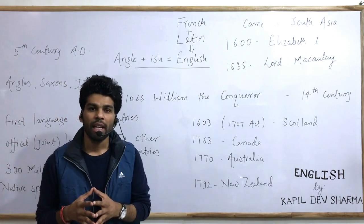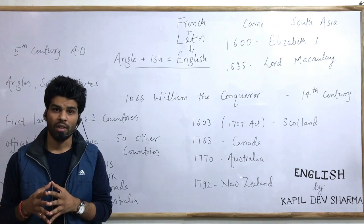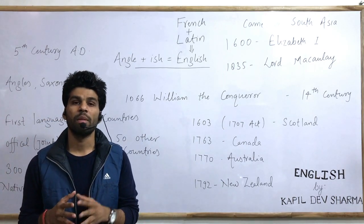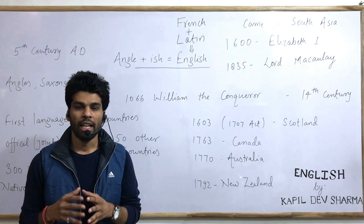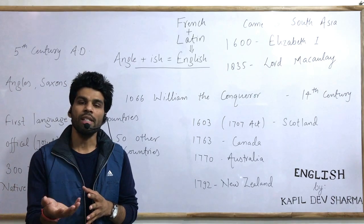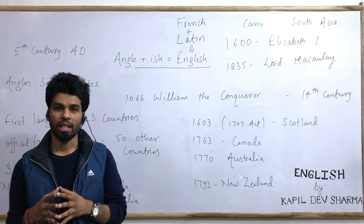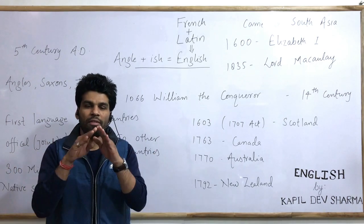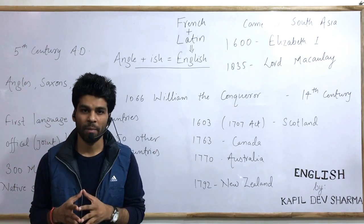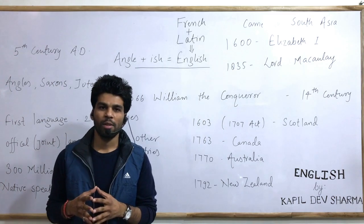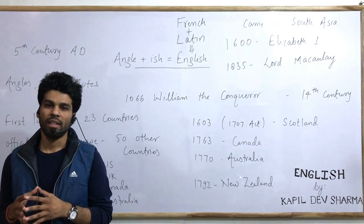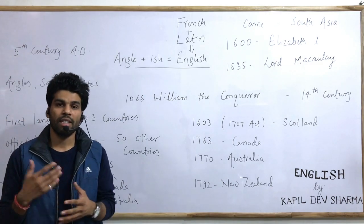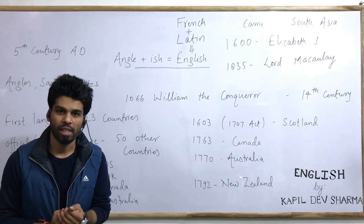In 1603, James VI of Scotland succeeded Queen Elizabeth I and became James I of England. The scope of English then came to Scotland, and in 1707, both thrones were formally united. In Canada in 1763, in Australia in 1770, and in 1792, English came into existence in New Zealand.